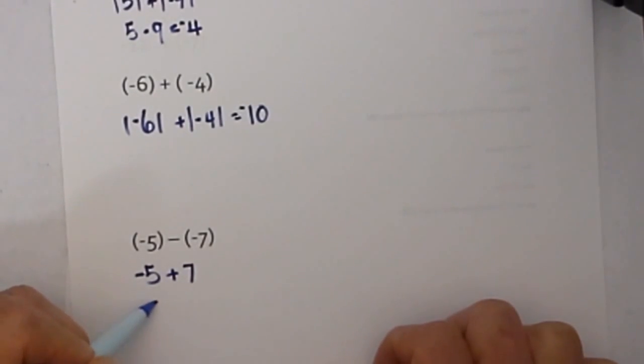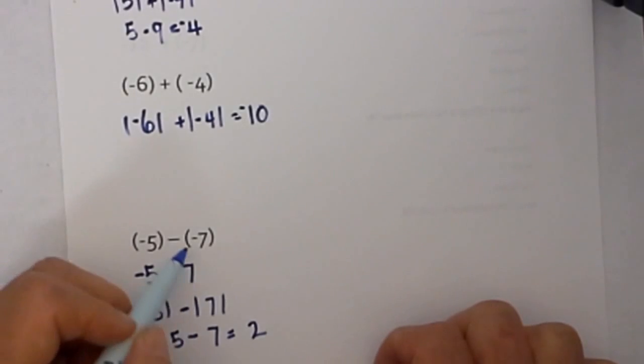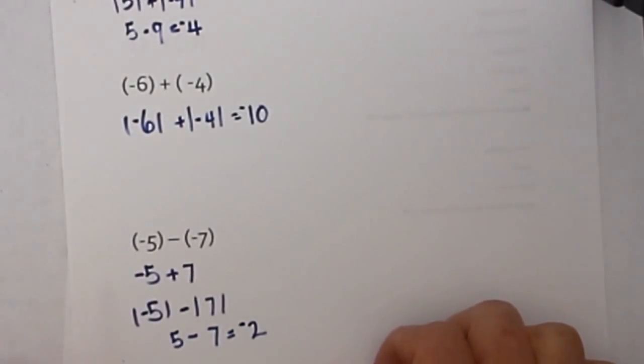So we know we will be subtracting. So we will subtract the absolute value of 5 minus the absolute value of 7. So that becomes 7 minus 5 which is equal to 2. And then we take the sign of the larger number which is 7 and it will be negative 2.